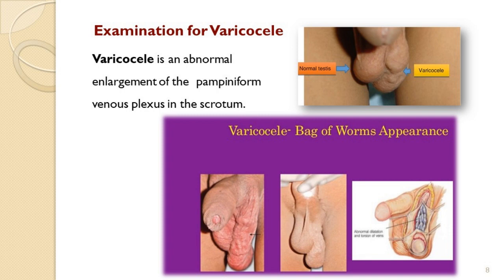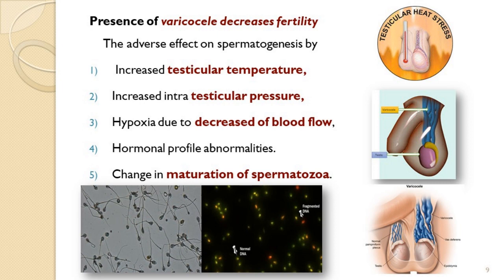Varicocele can be clearly seen on genital inspection and confirmed with palpation. The tortuous pampiniform venous plexus is seen on inspection, and on palpation one can feel a 'bag of worms' in the scrotal area. This is an important reason for low motility and reduced sperm count. In varicocele, stasis of blood leads to increased temperature, which is not ideal for spermatogenesis. As stasis increases, there is more testicular pressure, hampering blood supply and leading to testicular hypoxia, which results in poor sperm production, maturation, and altered motility.